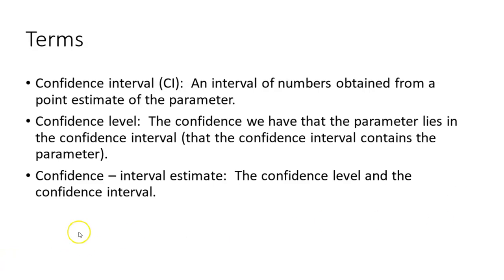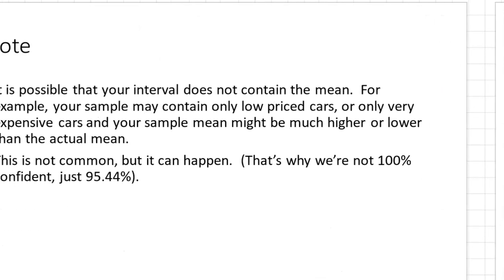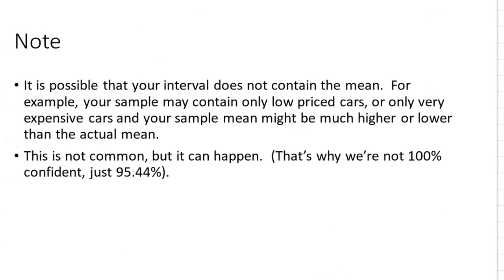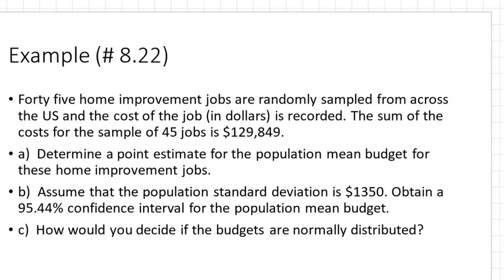So there is a balance between the actual interval and how confident you are that the value falls between those two endpoints. The confidence interval estimate combines those two pieces of information together — the interval itself and how confident you are that the numbers fall between those two values. It's possible your interval doesn't actually contain the mean, which is why I might be 95.44%, 95%, or 97% confident, but not 100% confident unless you have a really big confidence interval.